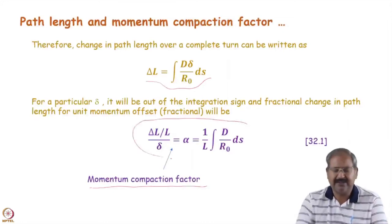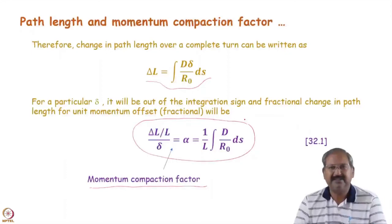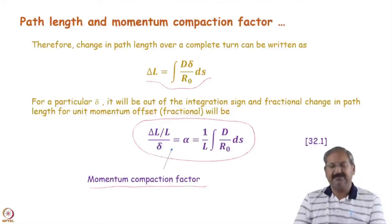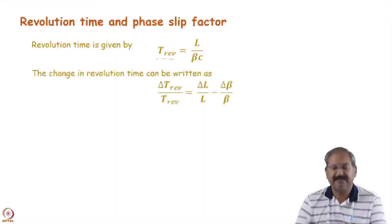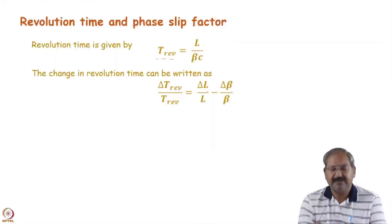The momentum compaction factor alpha decides what will be the change in revolution time for a particle with momentum deviation. The revolution time T is given by L / (beta * c). Taking the logarithmic derivative: delta T / T = delta L / L − delta (beta*c) / (beta*c). Since c is constant, this becomes delta T / T = delta L / L − delta beta / beta, where beta c is the velocity v and beta is the relativistic factor.